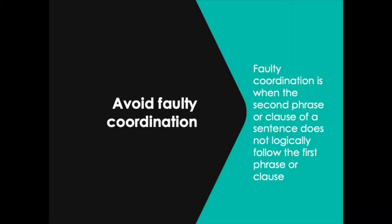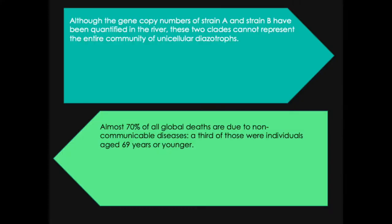The next topic is avoiding faulty coordination. Faulty coordination is when the second phrase or clause of a sentence does not logically follow the first phrase or clause of that sentence. Here is an example: 'Although the gene copy numbers of strain A and strain B have been quantified in the river, these two clades cannot represent the entire community of unicellular diazotrophs.'